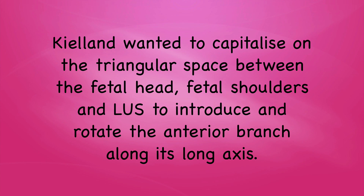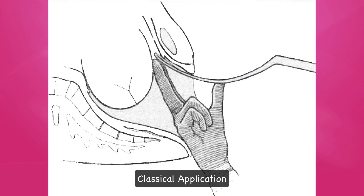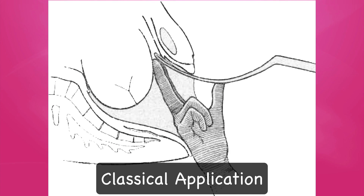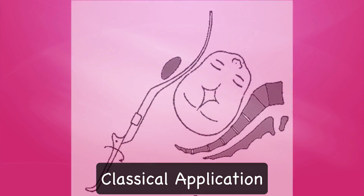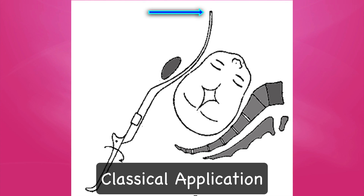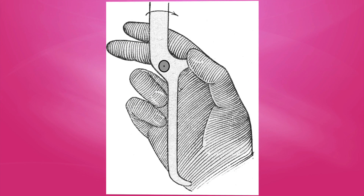First, I will talk about the classical method of application described by Kielland himself. Kielland wanted to capitalize on the triangular space between the fetal head, the fetal shoulders, and lower uterine segment to introduce and then to rotate the anterior branch along its long axis. Note that the bladder must be completely empty during this application method. The branches are assembled in front of the patient so that the knob on the handle points toward the occiput. The anterior branch is then introduced with its concavity anteriorly and then carried upwards under the fluid symphysis and collapsed bladder into the lower uterine segment to a point where it reaches the lower abdominal wall, which can be seen outside. The branch is then rotated along its long axis in a clockwise direction until the button points toward the occiput, which is at 9 o'clock in the right occipital transverse and at 3 o'clock in the left occipital transverse position.